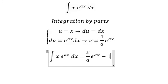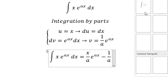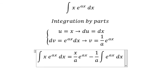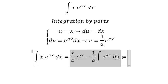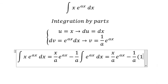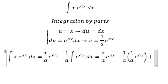We have x over a times e to the power of ax minus 1 over a times the integral of e to the power of ax dx. This integration gives 1 over a times e to the power of ax, and we add the constant c.